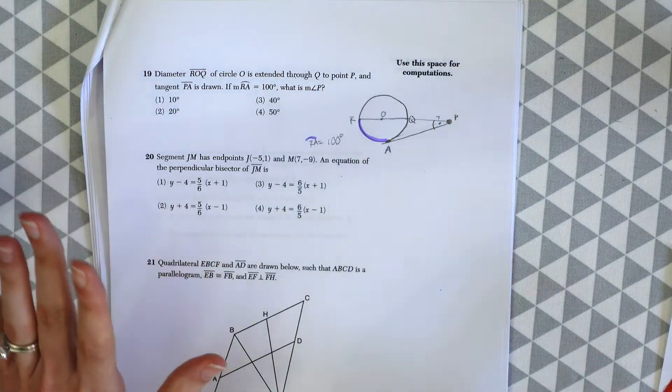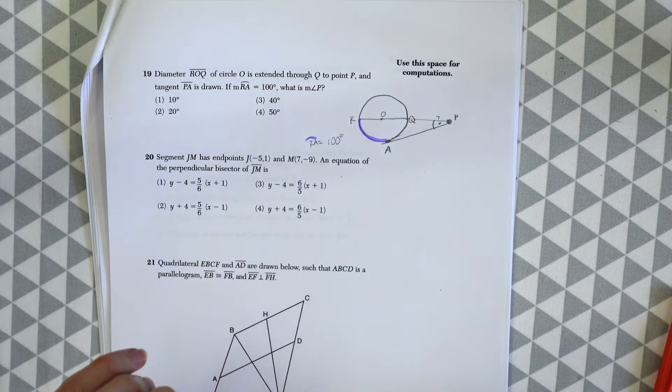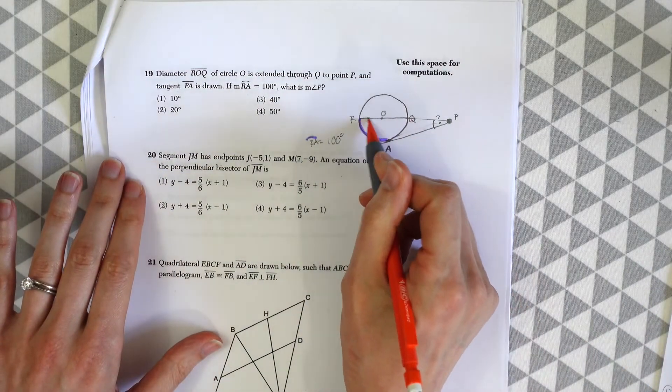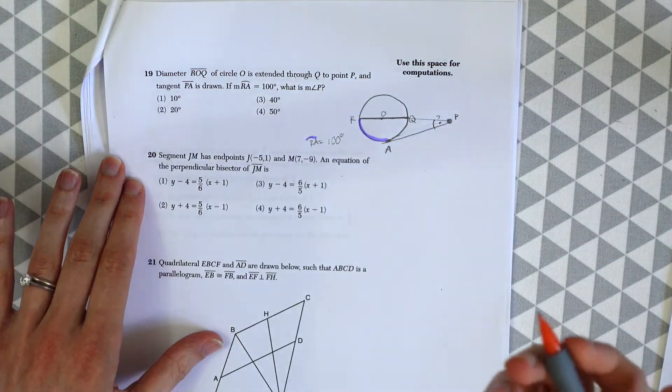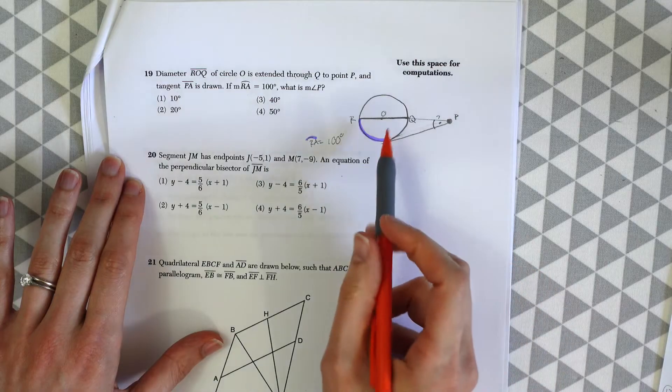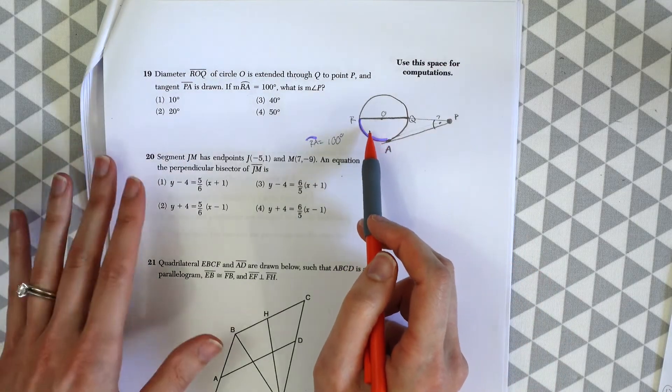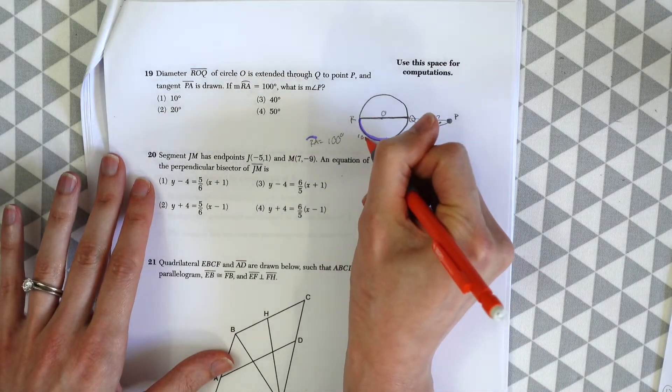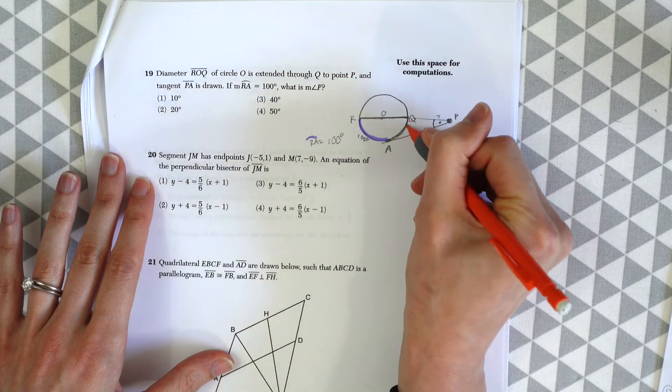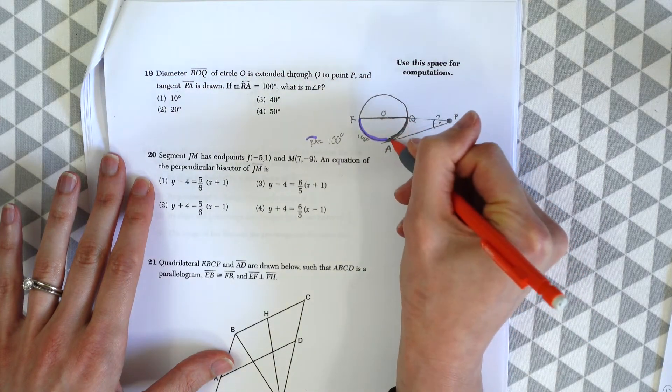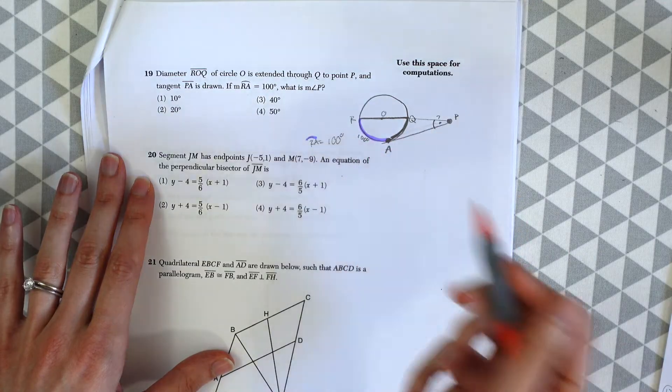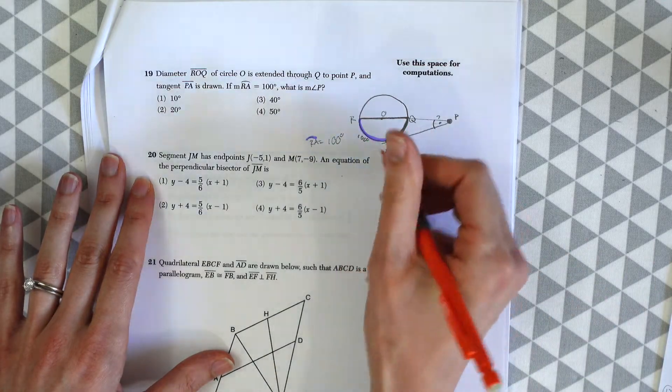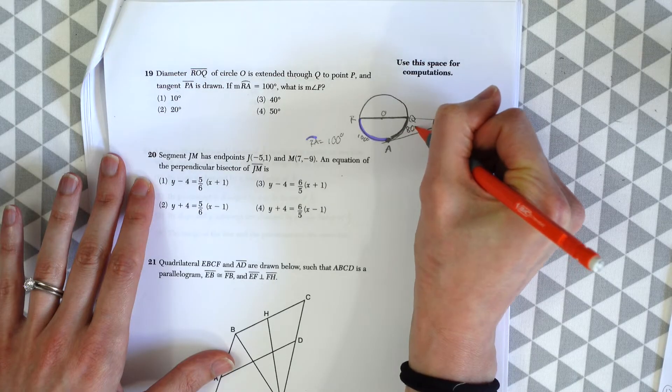This one will take a couple of steps. Since this is a diameter, it cuts the circle in half - that's 180 degrees. We're given 100 degrees, but we need the other side to figure out angle P. A semicircle equals 180 degrees, so this other side is 80 degrees.